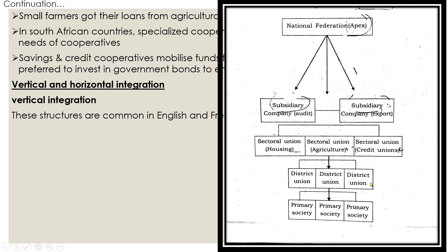Regional unions provide services like processing and transport to affiliated primary societies, and sectoral unions at the national level provide bulk purchase of fertilizer and other requirements suited to the nature of the cooperative. The national federation does not provide any economic service — it is the apex unit that controls all activities of the subsidiary, sectoral, regional, and primary societies. This is the general structure of a vertical integration system.